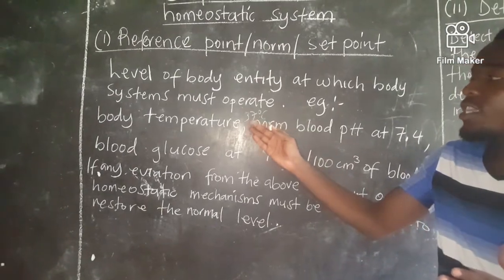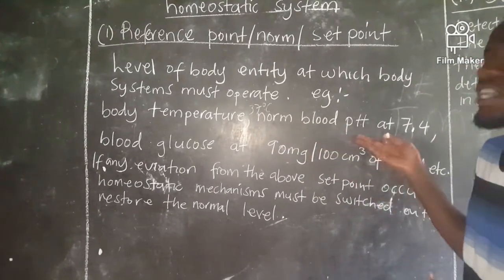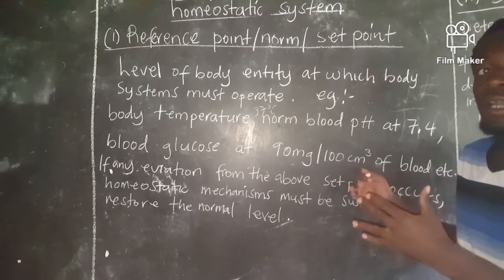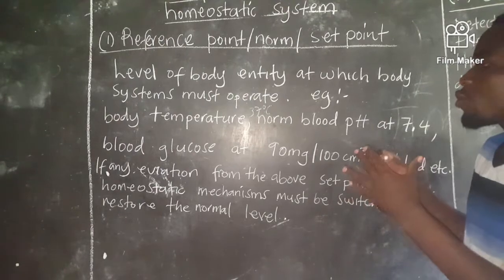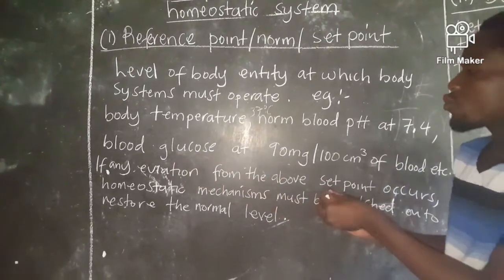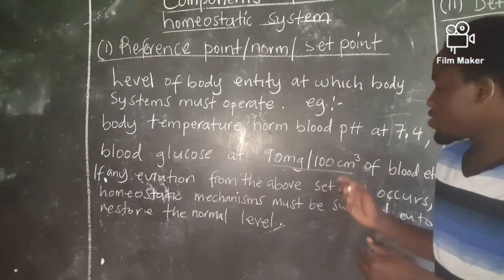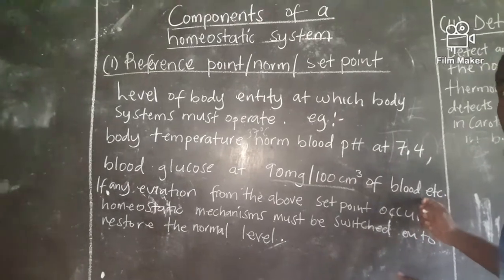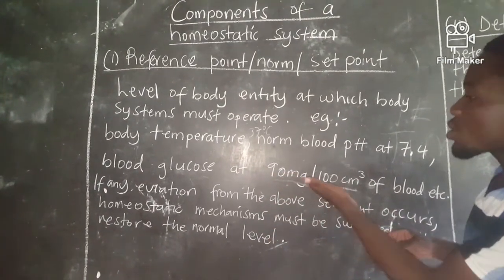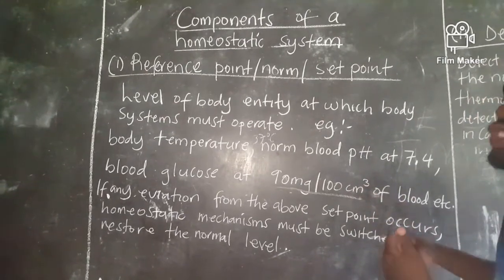For efficient functioning of certain body processes, mostly those controlled by enzymes, the temperature should be at 37. The normal blood pH should be at 7.4 — fairly alkaline — for normal enzyme functioning. The blood glucose level should be at 90 milligrams per 100 cubic centimeters of blood, as we'll see in one of our next videos.